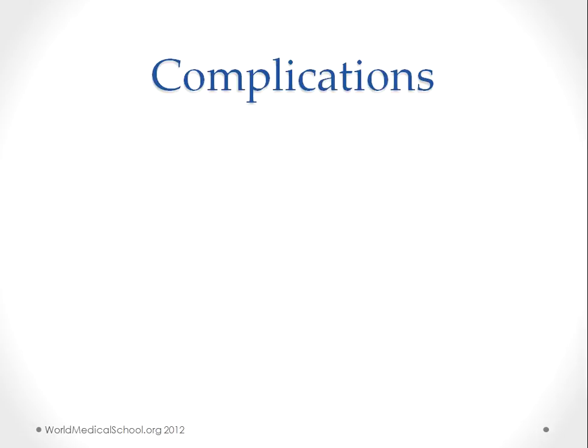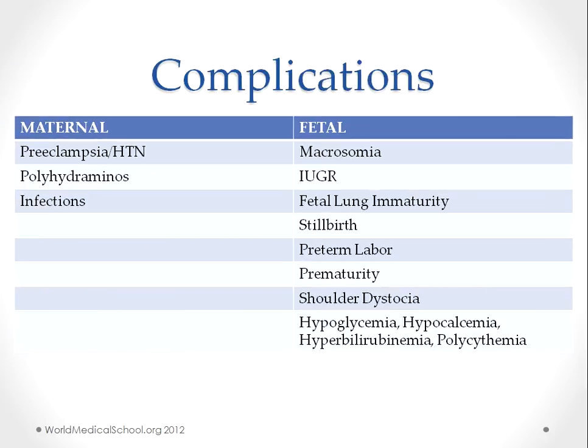Complications of gestational diabetes mellitus can be divided into maternal and fetal. Maternal complications include preeclampsia, which involves increased blood pressure, proteinuria, and edema, especially if the patient has underlying kidney problems. Hypertension is due to insulin resistance. Polyhydramnios occurs when increased blood sugar in the mother leads to increased blood sugar in the fetus, leading to increased urine production by the fetus. There is also an increased risk of infections like UTI and pyelonephritis, because elevated blood sugar provides a good culture medium for the growth of E. coli.